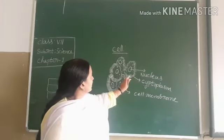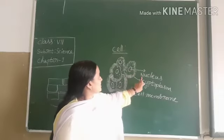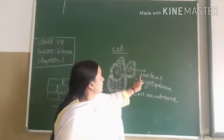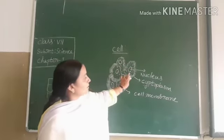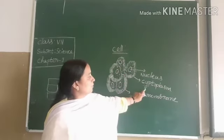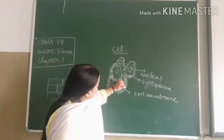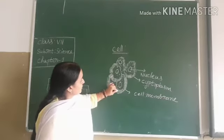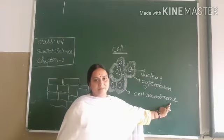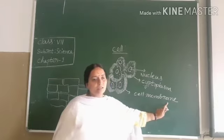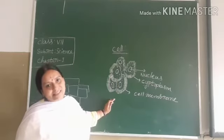In this structure, this is the nucleus — the center part is the nucleus. And this spotted part is called cytoplasm. It is covered by a membrane — the total cell is covered by membrane. It is called the cell membrane. So all living organisms are made up of cells.